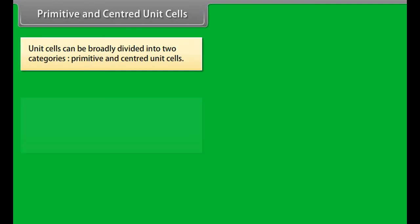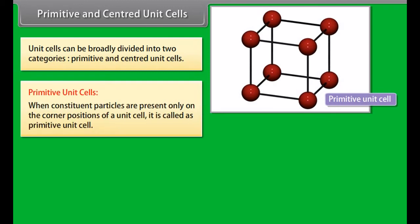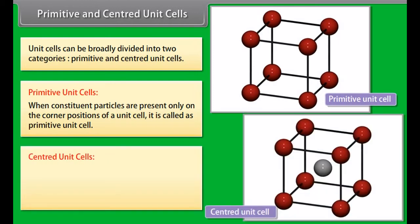Metals are orderly collections of positive ions surrounded by and held together by a sea of free electrons. These electrons are mobile and evenly spread throughout the crystal. These free and mobile electrons are responsible for high electrical and thermal conductivity of metals.